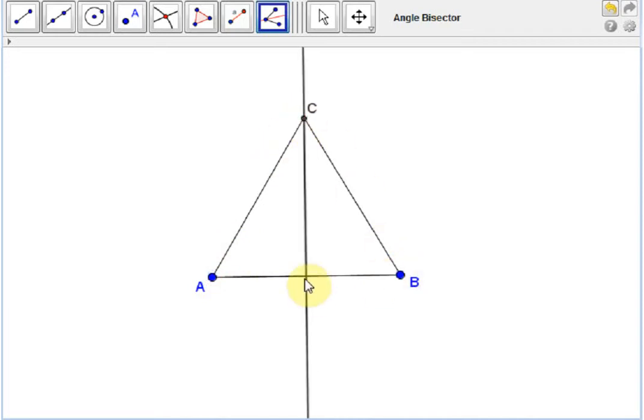This point of intersection which we have, we'll call this point D, and I claim that the point D bisects the segment AB.